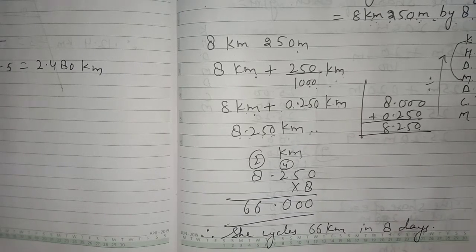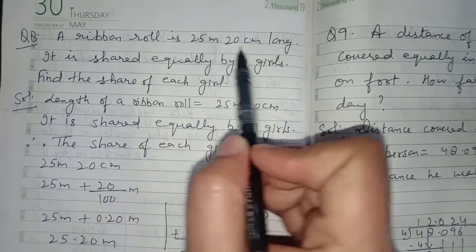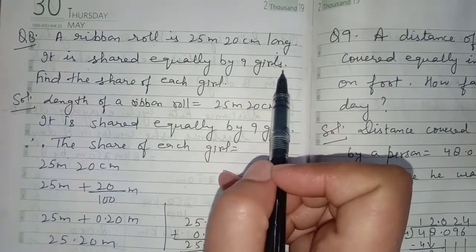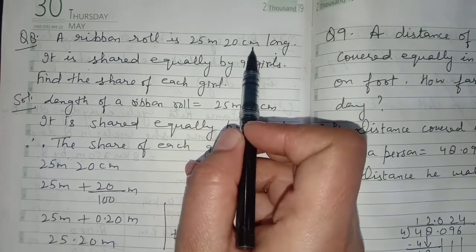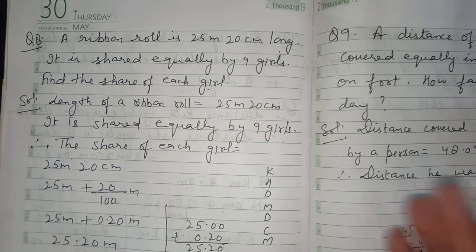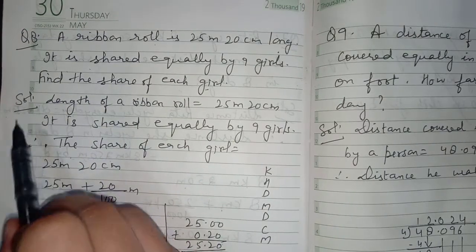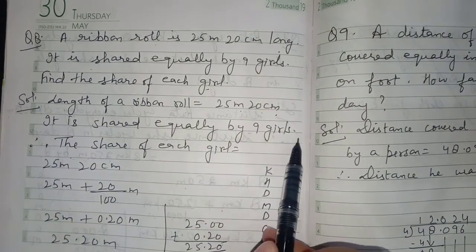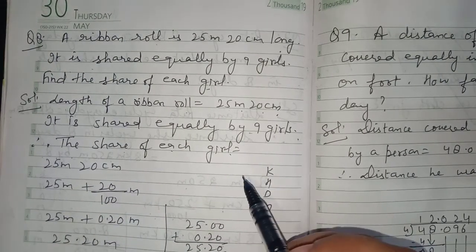Question number 8: A ribbon roll is 25 meter 20 centimeter long. It is shared equally by nine girls. Find the share of each girl. Length of the ribbon roll is 25 meter 20 centimeter, shared equally by nine girls. The share of each girl is calculated by division, but first we convert the unit.